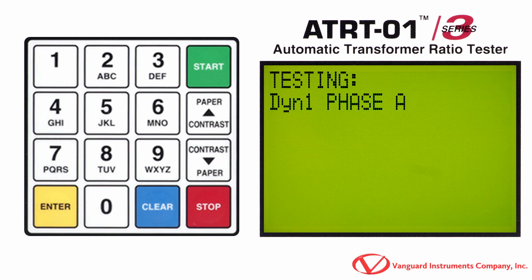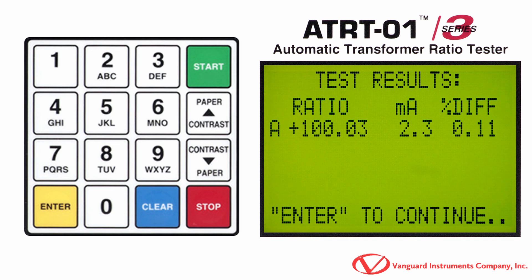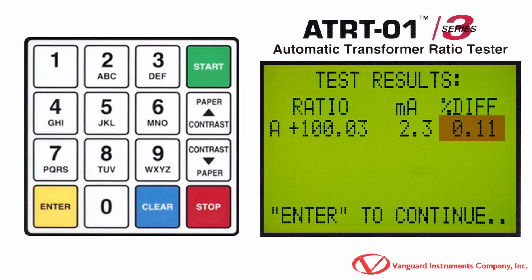After a few seconds, the test results for phase A will be displayed. The first column displays the measured ratio. The polarity is displayed as either a plus sign for in-phase or a minus sign for out-of-phase. The second column displays the excitation current. And if nameplate voltages were provided, the last column displays the percentage error, which is the percentage difference between the calculated ratio and the measured ratio. Press the Enter key to continue.